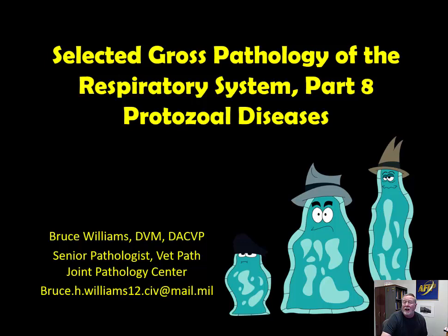While there are a number of protozoans that end up in the lungs and may cause disease, a lot of them don't leave significant or definitive gross lesions. For example, think about all the protozoans that live within the blood of birds — a lot of them have schizonts, schizogony, gametogeny within the lungs of birds, but the lesions aren't specific and often not discernible. So let's look at a couple that I think you have a pretty good shot at identifying based on a little history and maybe some gross lesions.